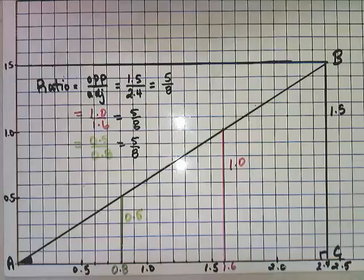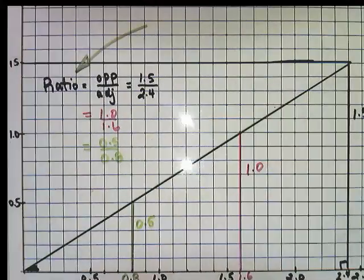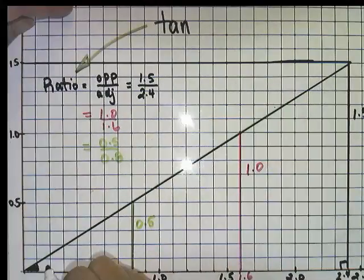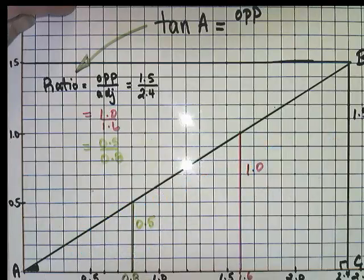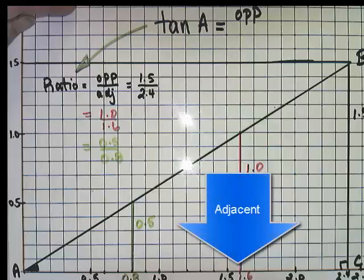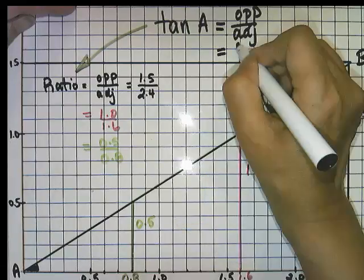This special ratio that we've drawn has got a name. It's called the tangent ratio. The tangent ratio then is the opposite side of the angle divided by the adjacent side of the angle. In this case, for this size angle, they are all the same. It is 5 over 8.